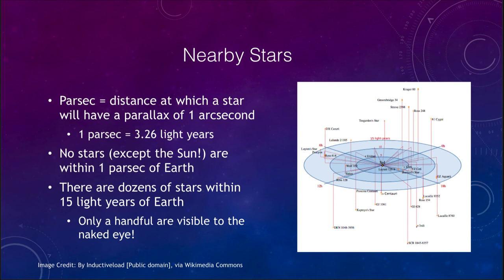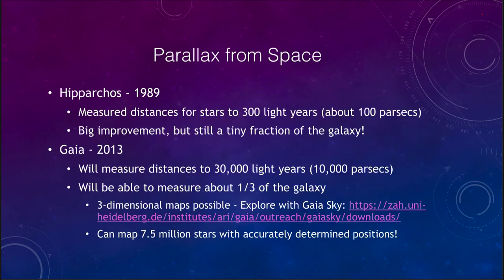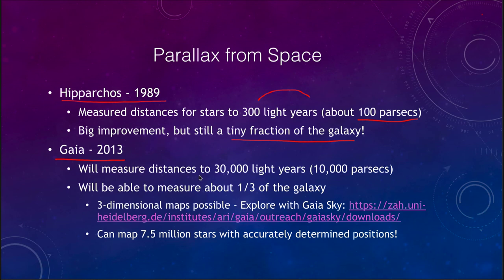To improve on this, one thing we can do is make measurements from space. The satellite Hipparcos, launched in 1989, was able to measure distances out to 300 light years, or 100 parsecs — a big improvement over what we could do from Earth, but still a tiny fraction of what we can see in the galaxy. More recently, the Gaia mission launched in 2013 is working on measuring distances to 10,000 parsecs, or 30,000 light years. That is still only about a third of our galaxy, which is 100,000 light years across, and it does not help us with determining distances to other galaxies.